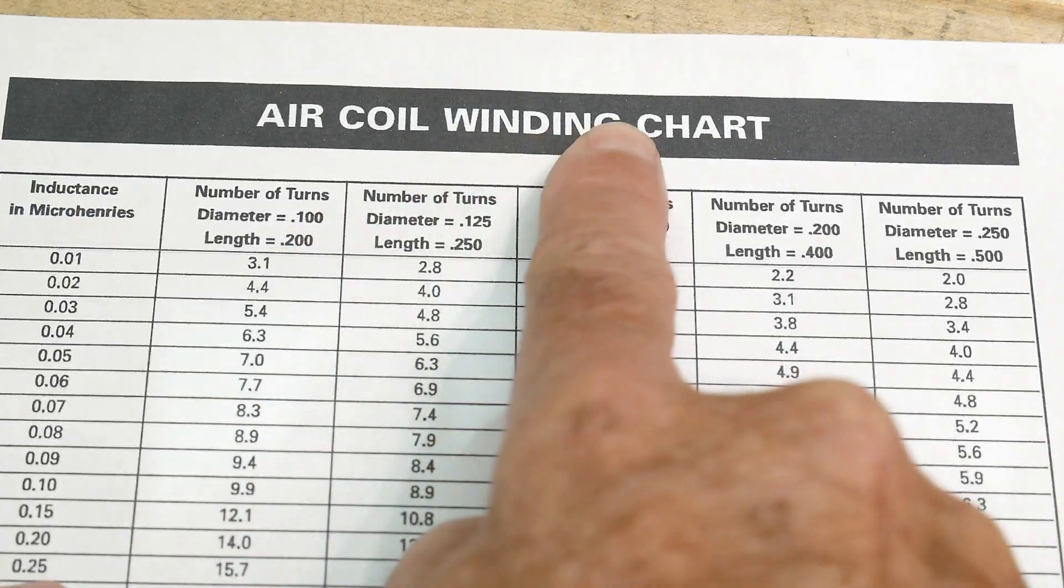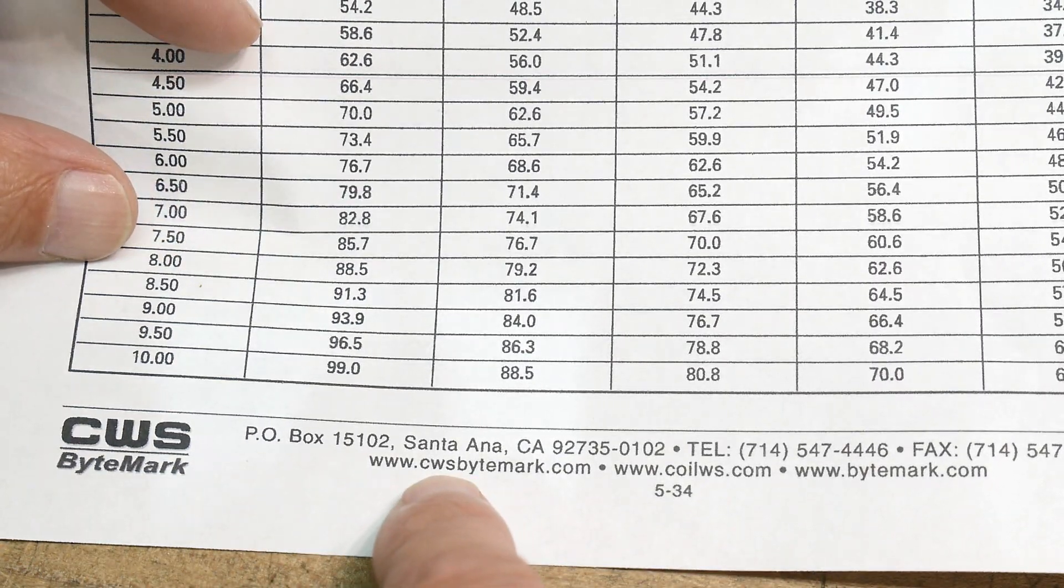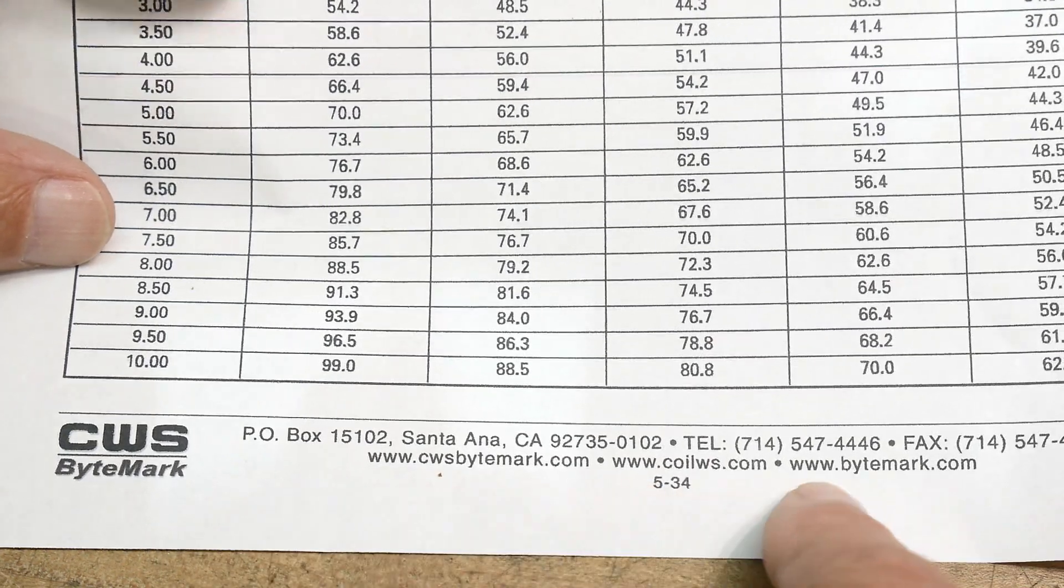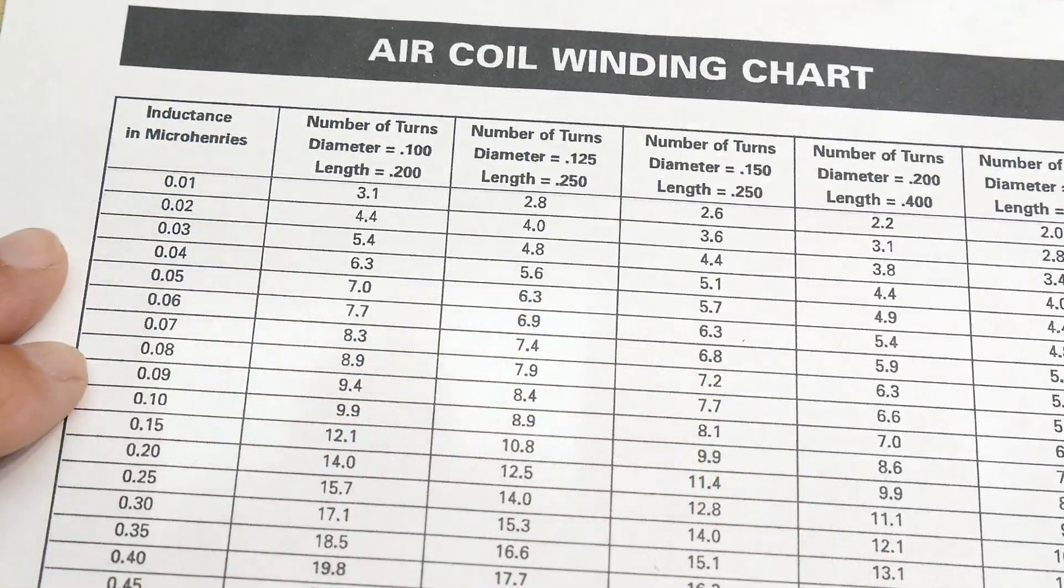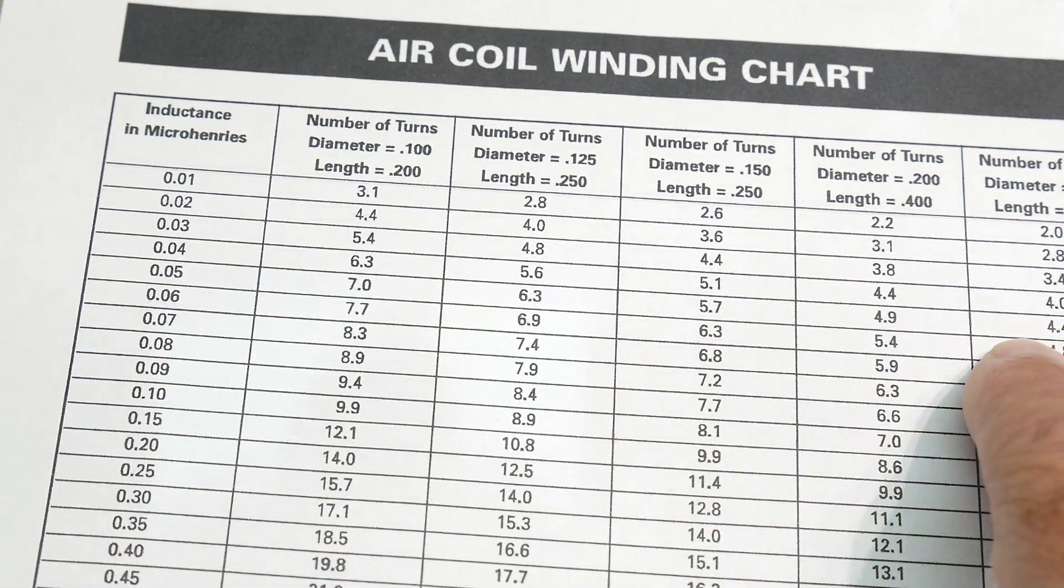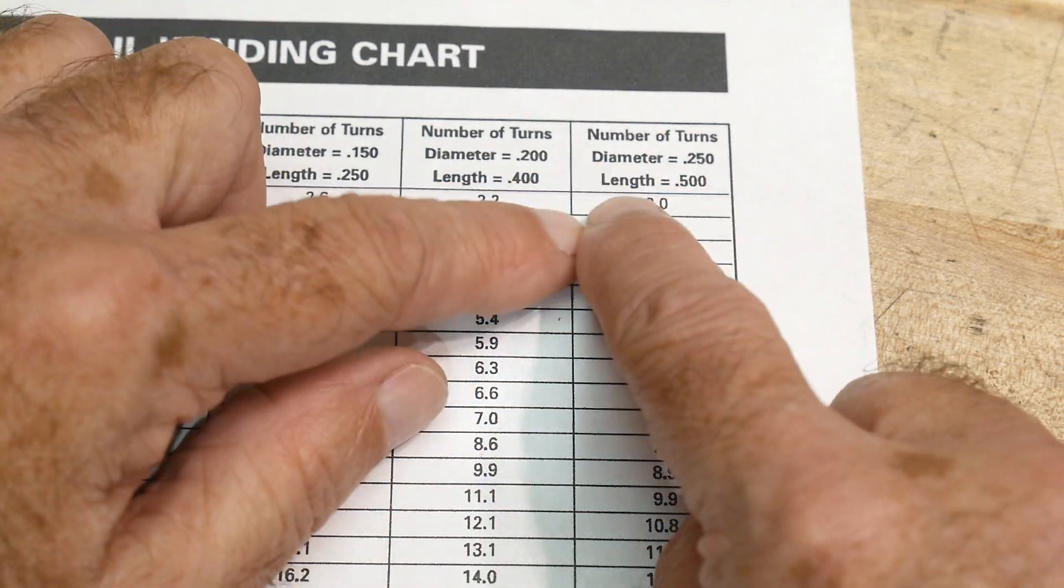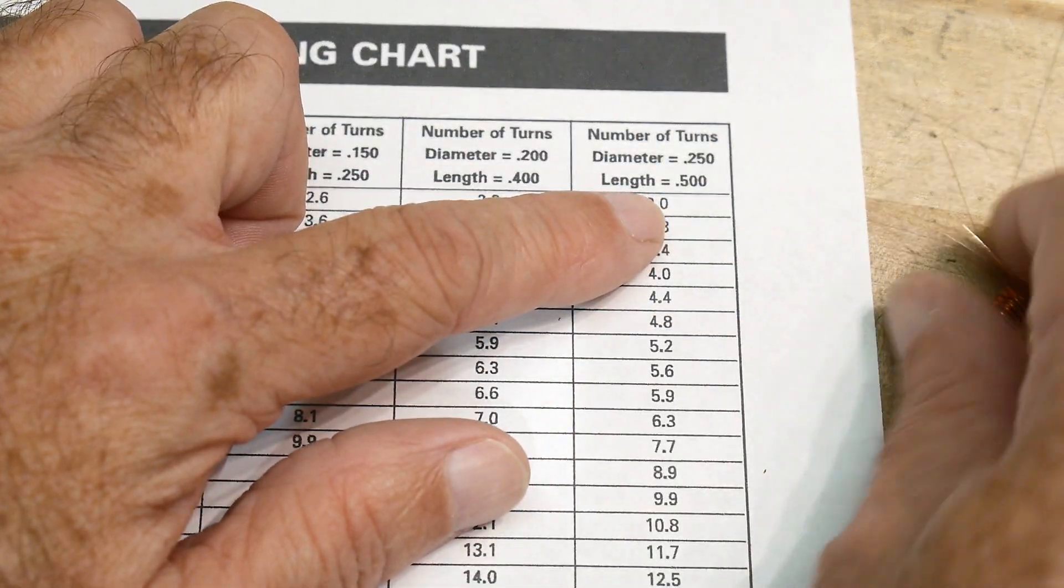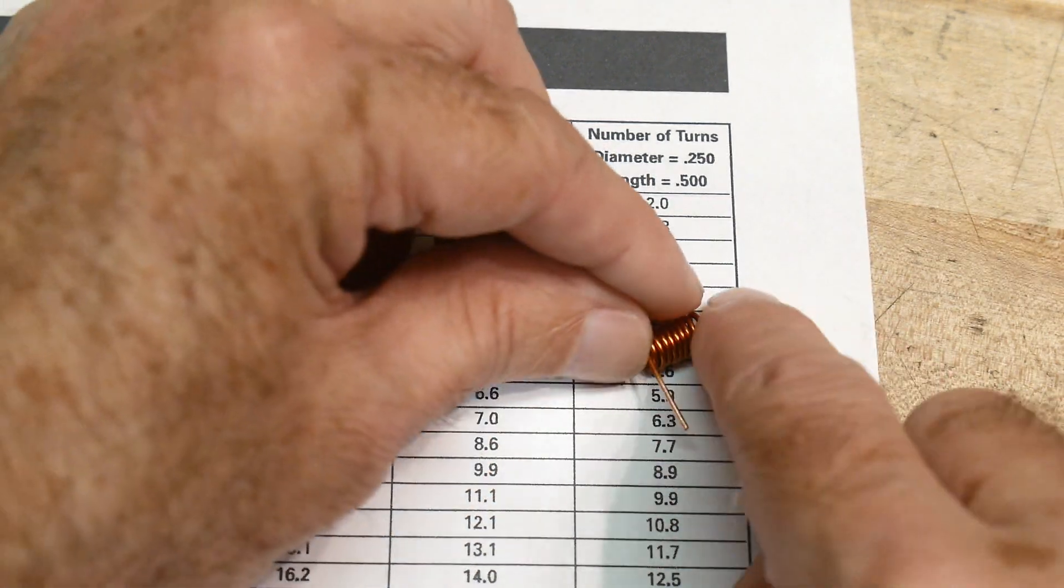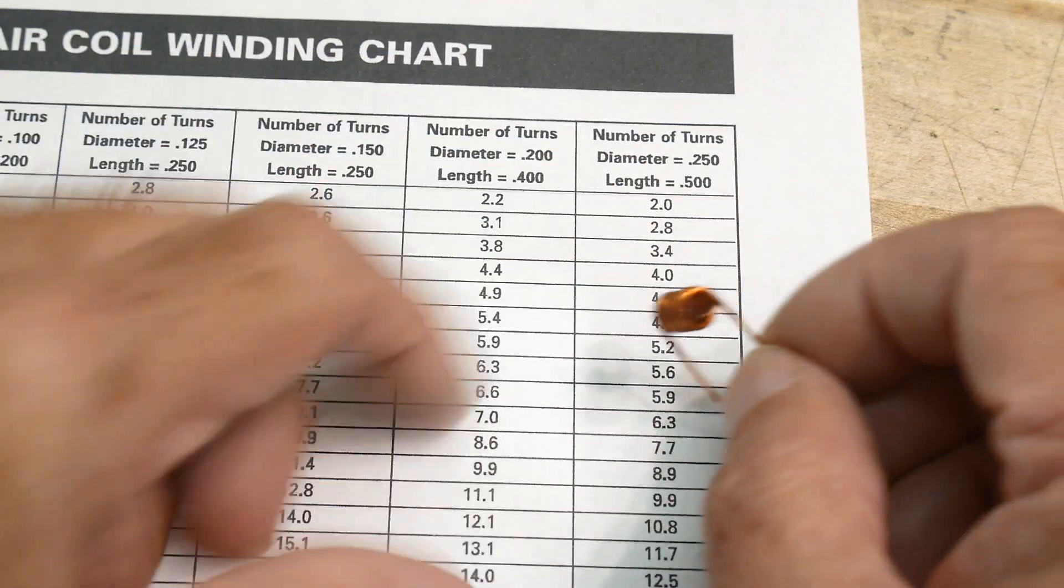So let's look at this one. This one is an air coil winding chart. This is put out by CWS Byte Mark in Santa Ana, California. It tells you how many micro Henrys you will have if you do these things. So let's say you have a quarter inch diameter and it's five inches long, which is much like this one.